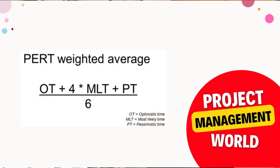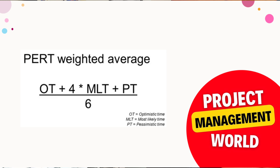The second formula is the beta distribution, also called PERT - Program Evaluation and Review Technique. The difference here is that we give more weightage to the most likely scenario. In the formula, the most likely value is multiplied by 4, while optimistic and pessimistic are added once each, and the total is divided by 6.